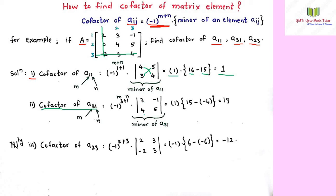The remaining elements are 3, minus 1, 4, 5. Minus 1 to the power 4 equals 1. The determinant is 3 times 5 minus 4 times minus 1, which is 15 plus 4, giving 19. So the cofactor of a31 equals 19.